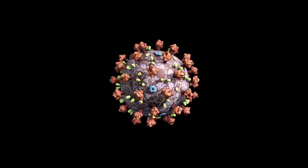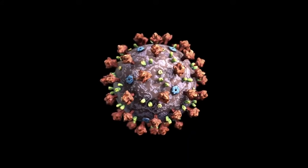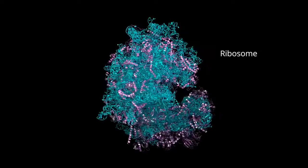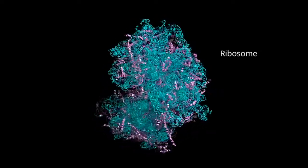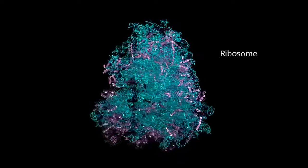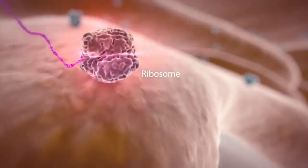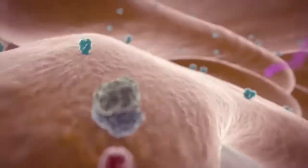The coronavirus, on the other hand, doesn't need to enter the host cell nucleus. It can directly access parts of the host cell called ribosomes. Ribosomes use genetic information from the virus to make viral proteins, such as the spikes on the virus's surface.